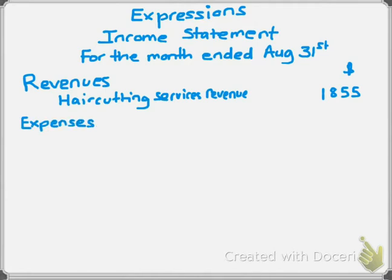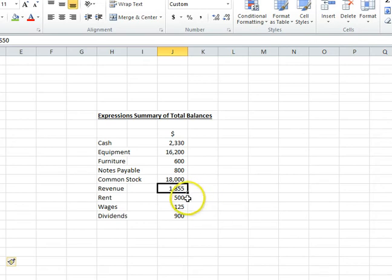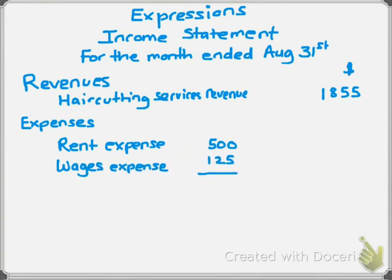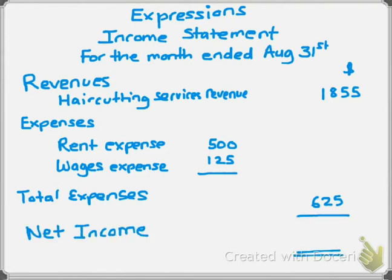For expenses, we had rent for $500 and wages for $125. We list them indented together: rent expense of $500, wages expense of $125, and our total expenses are $625. Net income is calculated by subtracting total expenses from revenues. With expenses in parentheses to show they're subtracted, our net income equals $1,230.